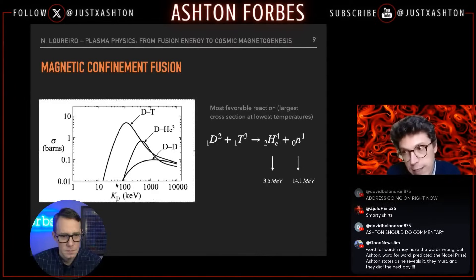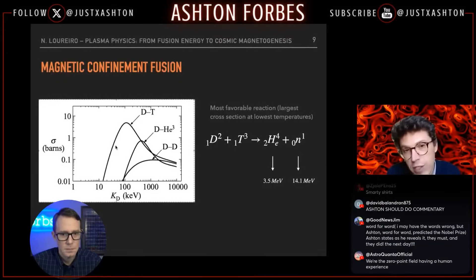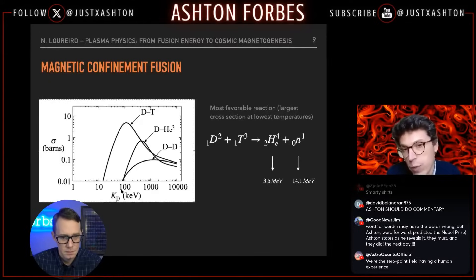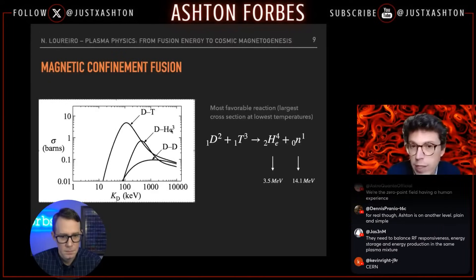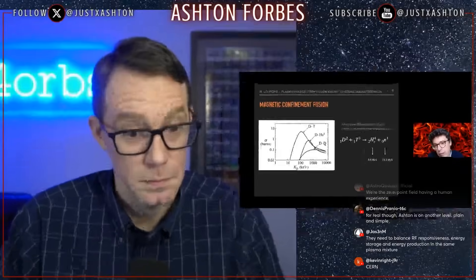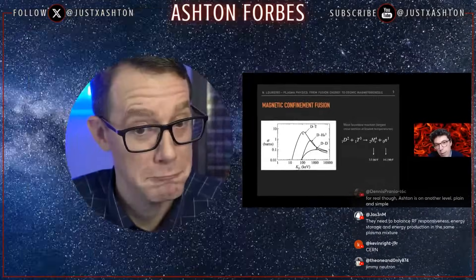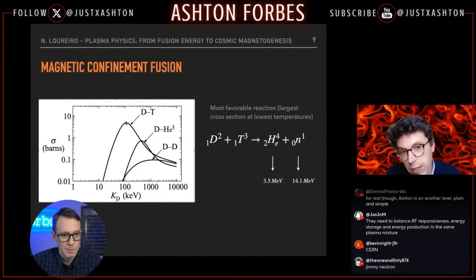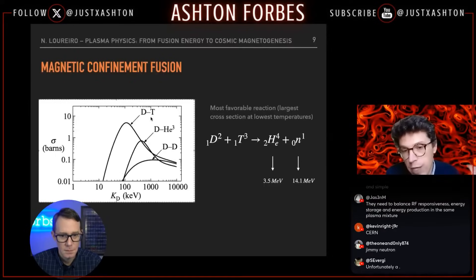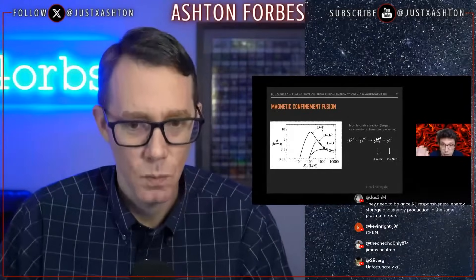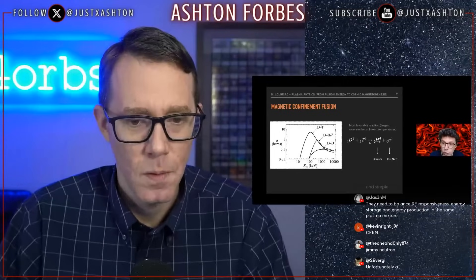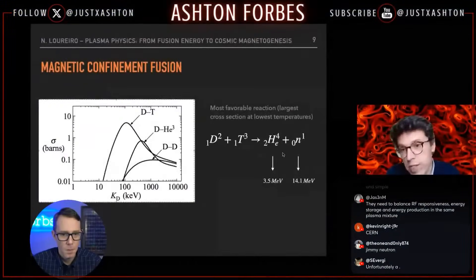If you think it's difficult to heat something to very high temperatures, what you seek is the reaction that maximizes cross section at the smallest possible temperature. You could do it with helium-3 or deuterium-deuterium, but the reaction with the highest cross section at the lowest temperature happens to be deuterium-tritium. That's why we use it. This reaction produces an alpha particle with 3.5 MeV energy.